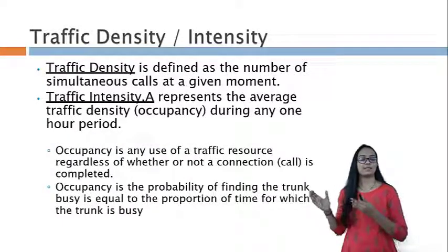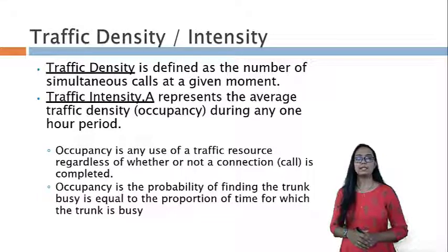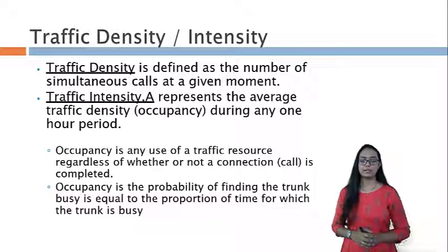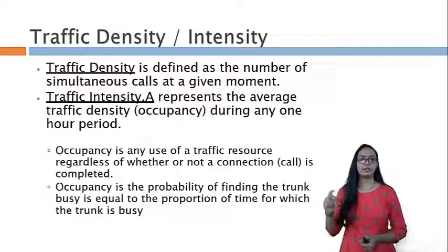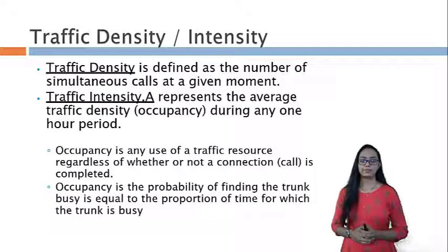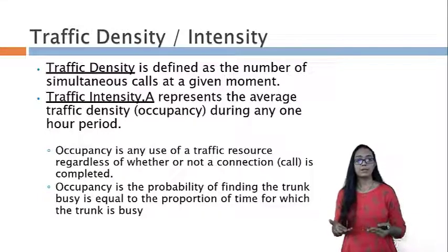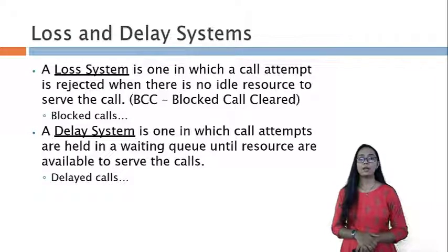Traffic density is defined as the number of simultaneous calls at a given moment, while traffic intensity represents the average traffic density during any one-hour period. Occupancy is any use of a traffic resource regardless of whether a connection is completed. The probability of finding a trunk busy equals the proportion of time for which the trunk is busy.